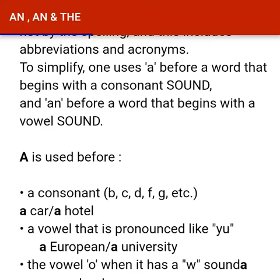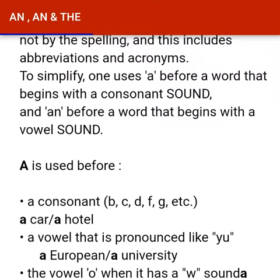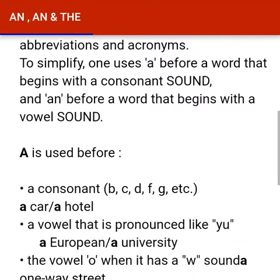Vowel O — 'one way street': when we say 'one,' it comes with a W sound. So 'a one way street' — because 'one' starts with a W sound, not a vowel sound. Isliye uske pehle A ka istemal kiya hai. An one way street nahi hoga — that would be wrong. We write 'a one way street' because it is a consonant sound, not a vowel.